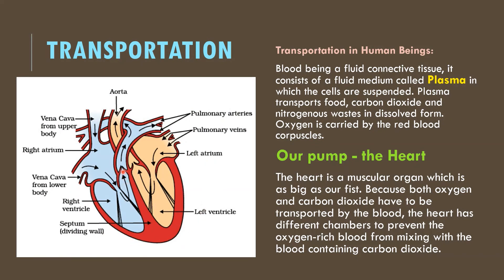The heart is muscular so that it can pump blood effectively. There are four chambers in the heart — two on each side. On the right-hand side we see a left atrium and left ventricle; on the left-hand side is a right atrium and right ventricle. These two ventricles are separated by a septum, which is a dividing wall, so that oxygenated blood is kept separated from deoxygenated blood.